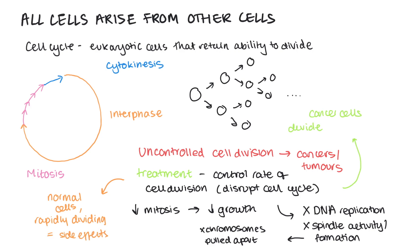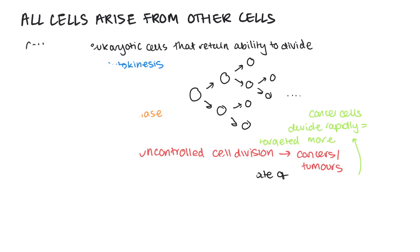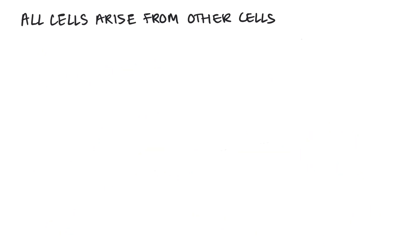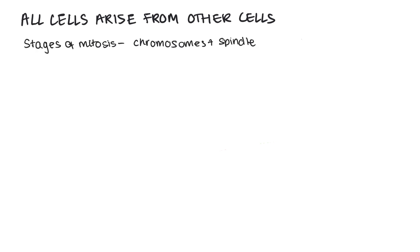You need to know what's happening in the different stages of mitosis, specifically the behaviour of chromosomes and the role of spindle fibres attached to centromeres in the separation of chromatids. There are four stages: prophase, metaphase, anaphase, and telophase — PMAT.